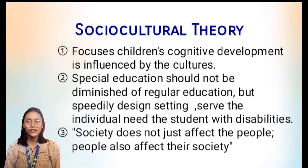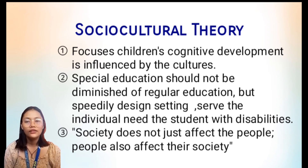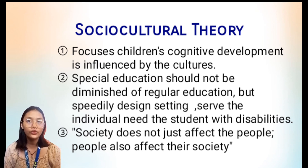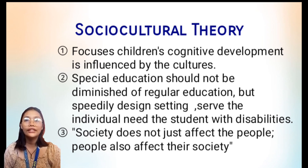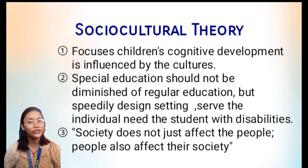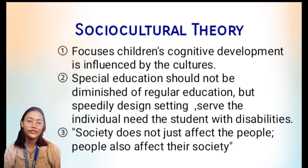Lev Vygotsky also suggested that human development results from a dynamic interaction between individuals and society. Through this interaction, children learn gradually and continuously from their parents and teachers. However, this learning varies from one culture to the next. It is important to note that Vygotsky's theory emphasizes the dynamic nature of this interaction: society does not just impact people, but people also affect their society.